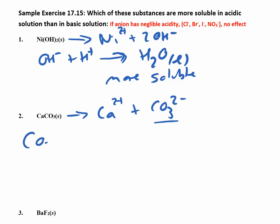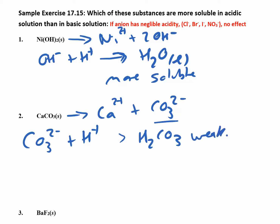For calcium carbonate, we write out the reaction and look at the anion CO₃²⁻. When CO₃²⁻ reacts with H+, you get H₂CO₃, which is a weak acid. Since a weak acid stays around and effectively removes the carbonate from solution, calcium carbonate is also more soluble under acidic conditions.